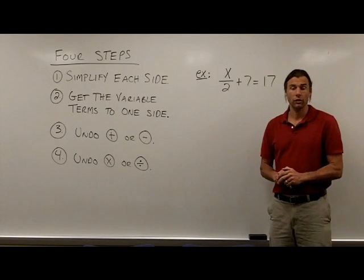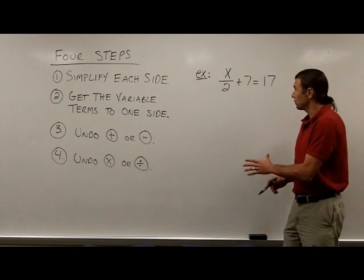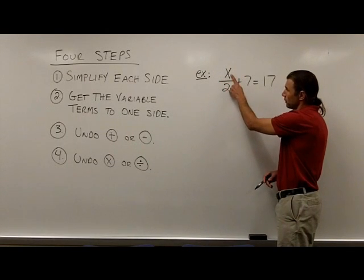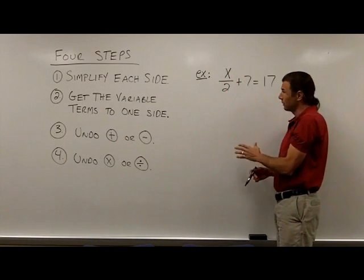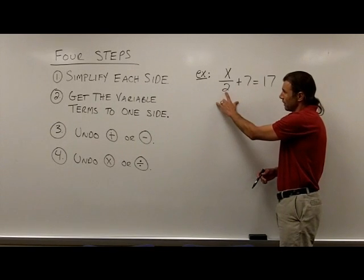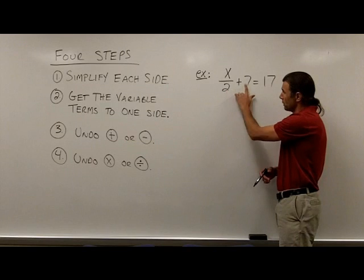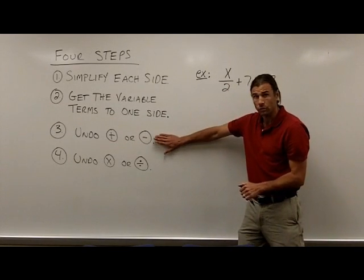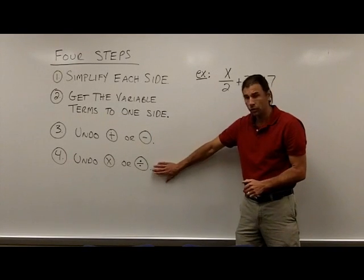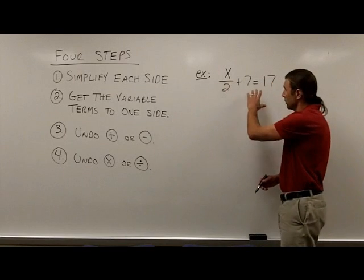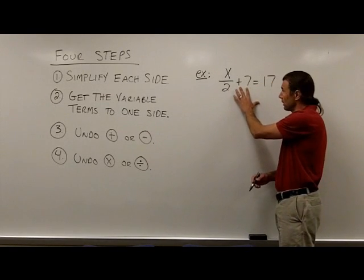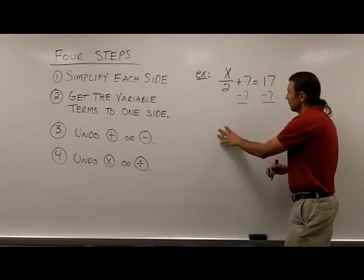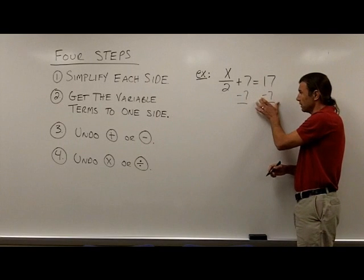The next example requires two steps to solve. Looking at the variable side, which is the left side, there are two things going on: an addition of 7 and a division by 2. To clear both, we follow a specific order — first undo addition or subtraction, then undo multiplication or division. So the first thing to get rid of is the addition of 7 by subtracting 7 from both sides.